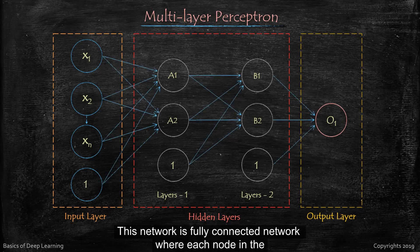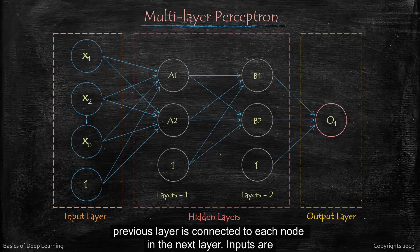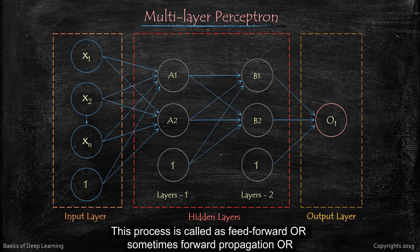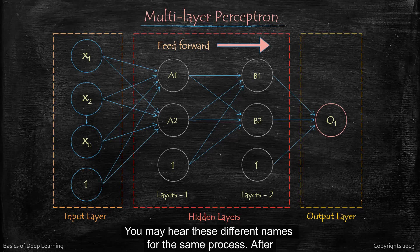Where each node in the previous layer is connected to each node in the next layer. Inputs are processed at each node and then pass to the next node until it generates an output. This process is called as feed forward, or sometime forward propagation or forward pass. You may hear these different names for the same process.